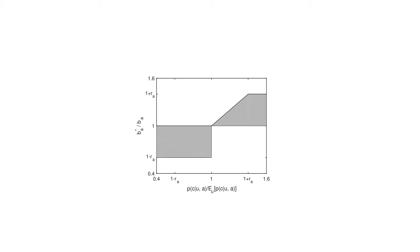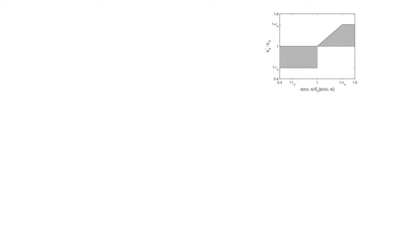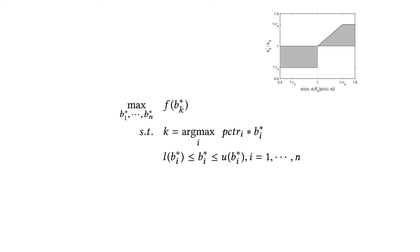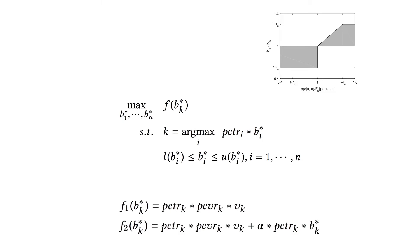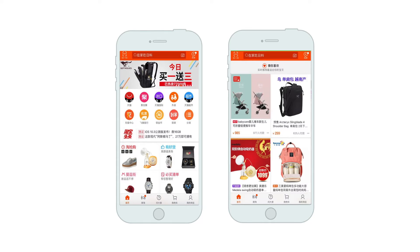According to the auction theory, we derive a bid optimization boundary based on the prediction of conversion rate. And then we solve an optimization problem to promote any indicator, including but not limited to Taobao advertising revenue and overall gross merchandise volume. The proposed OCPC algorithm has been applied in Taobao item CPC ads and banner CPC ads, and has benefited users and advertisers for a long time.